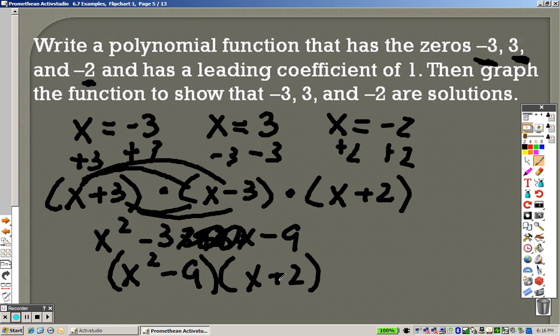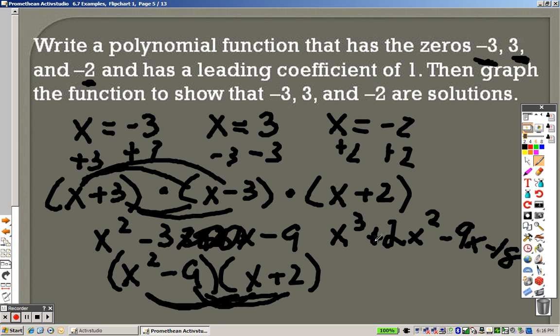So now I have to do this again. x squared times x is x cubed. x squared times 2 is positive 2x squared. Negative 9 times x is negative 9x. And negative 9 times 2 is negative 18. And really, right there is your answer.